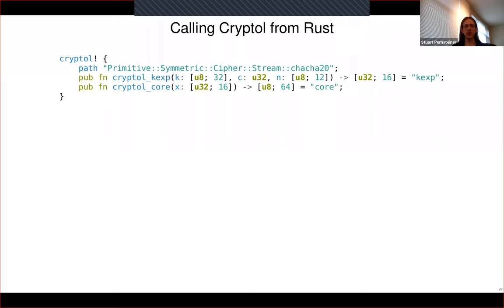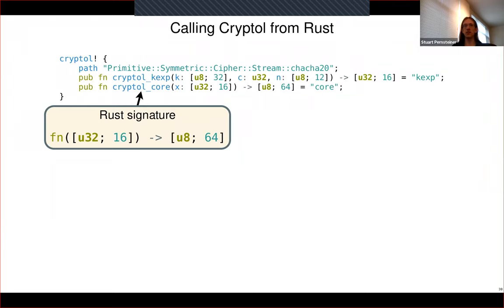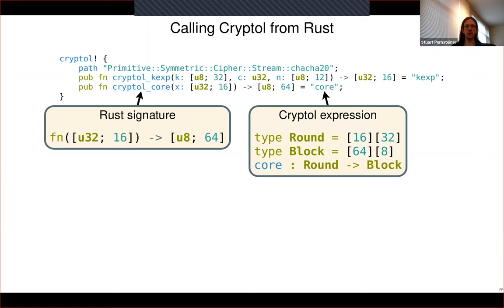To handle this inside CruxMirror, we need a way to call Cryptol functions from Rust. We have a cryptol! macro for this. You give it the name of a Cryptol module, then define bindings — Rust functions that, when called, execute Cryptol code instead of Rust code, similar to FFI bindings but with a definition on the right-hand side. Each binding has a Rust signature and a Cryptol expression wrapped as a string constant. For example, a Rust signature of an array of 16 32-bit words going to an array of 64 bytes corresponds to Cryptol's round-to-block type. The Cryptol expression is evaluated in the context of the module and can be any arbitrary Cryptol expression, not just a single function name.